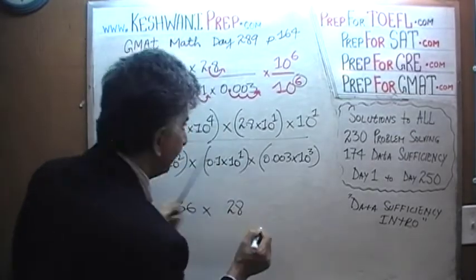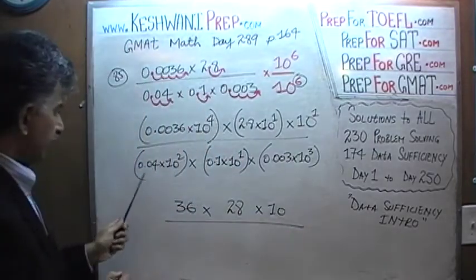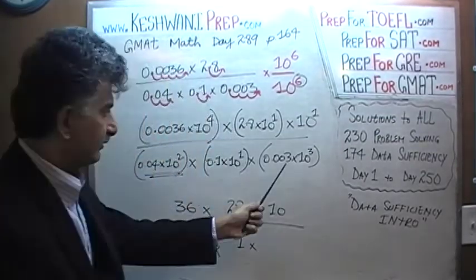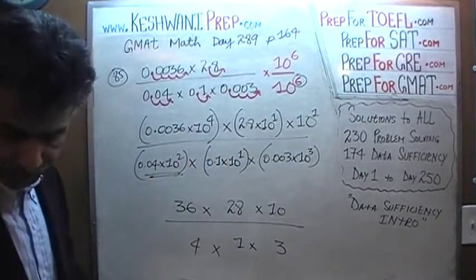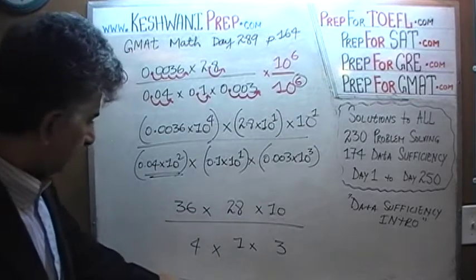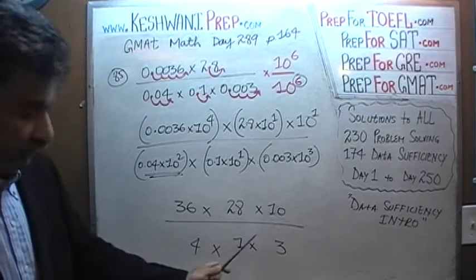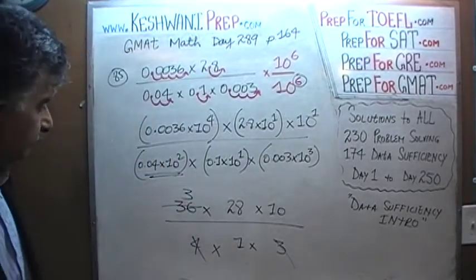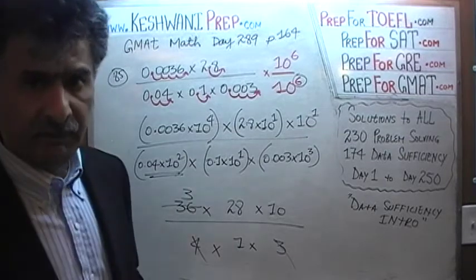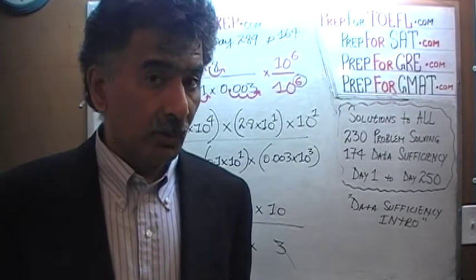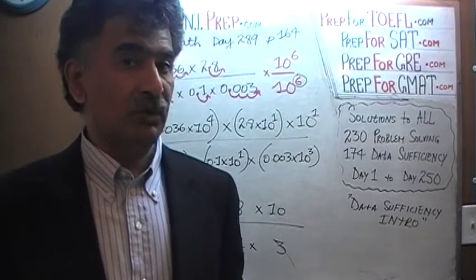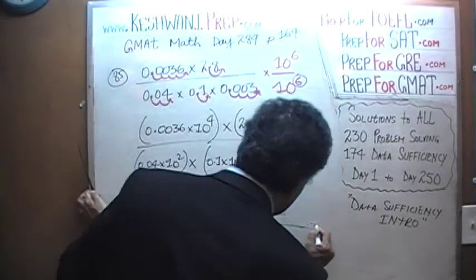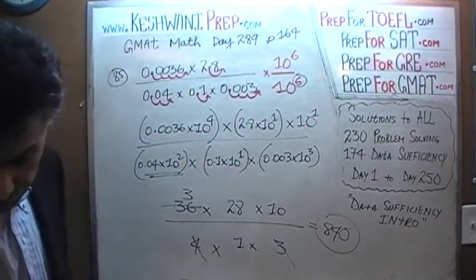On the bottom: 4 times 1 times 3 equals 12. On the top: 36 divided by 12 — since 4 times 3 is 12 and there are three 12s in 36 — gives 3. Then 3 times 28 times 10: 25 times 3 is 75, so 28 times 3 is 84, times 10 is 840. The final answer is 840.